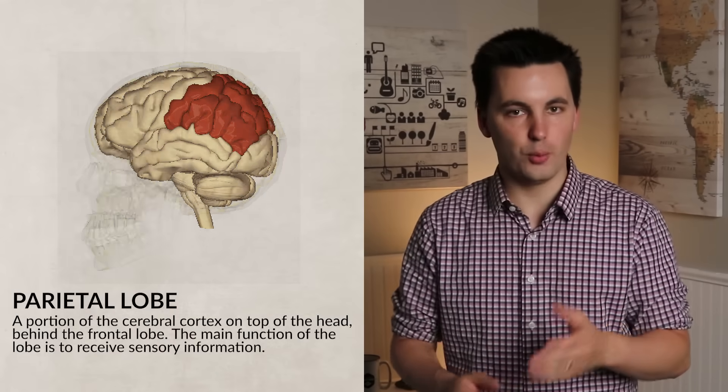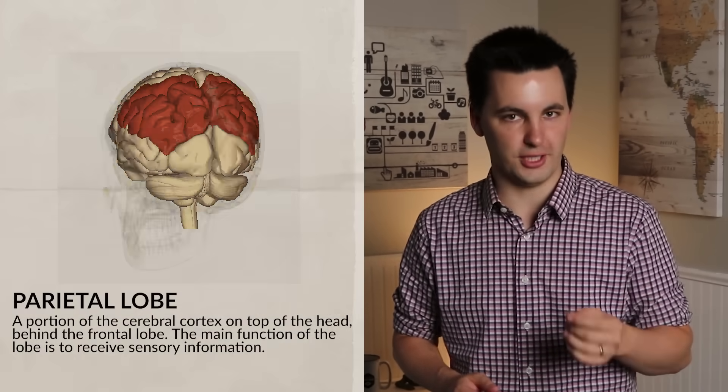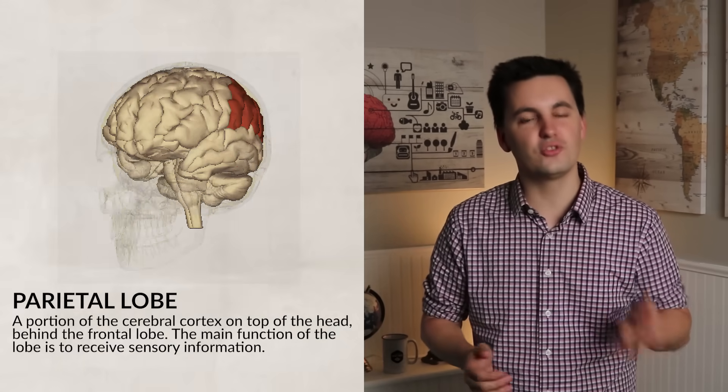The next lobe is the parietal lobe, which sits on the top of your head, right behind the frontal lobe. It's separated by the central sulcus. The main function of this lobe is to receive sensory information. It lets you understand different senses, such as touch, pain, temperature, and spatial orientation. All right, so remember how we talked about the motor cortex and how it sits like a headband from ear to ear as part of that frontal lobe? Well, the somatosensory cortex is parallel and touching the motor cortex.